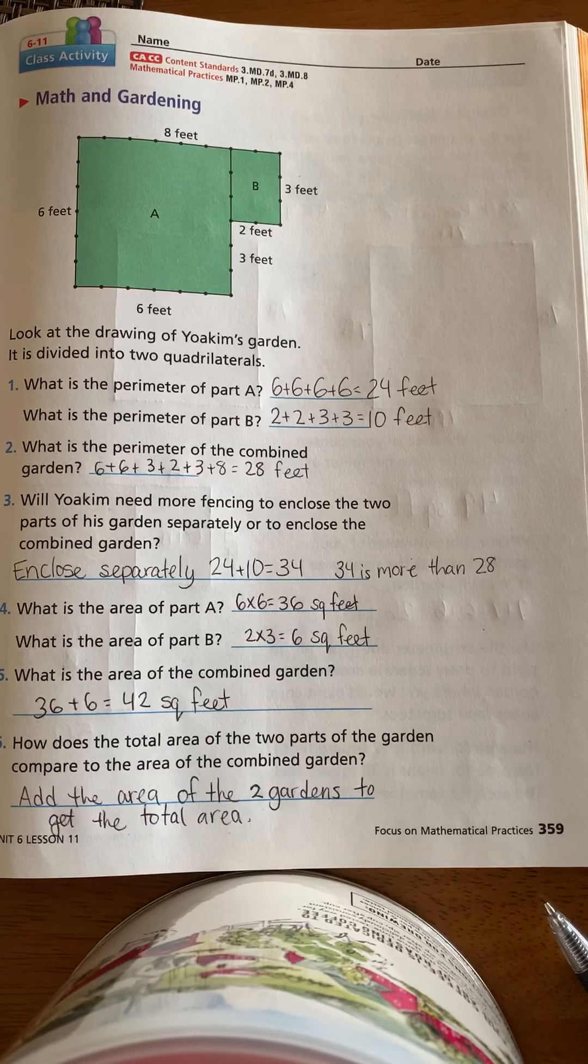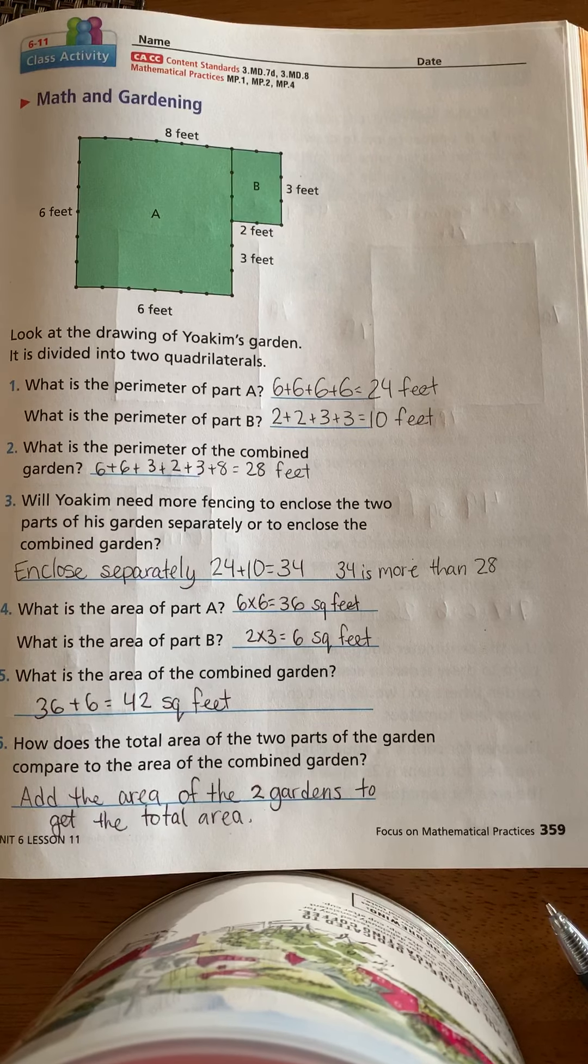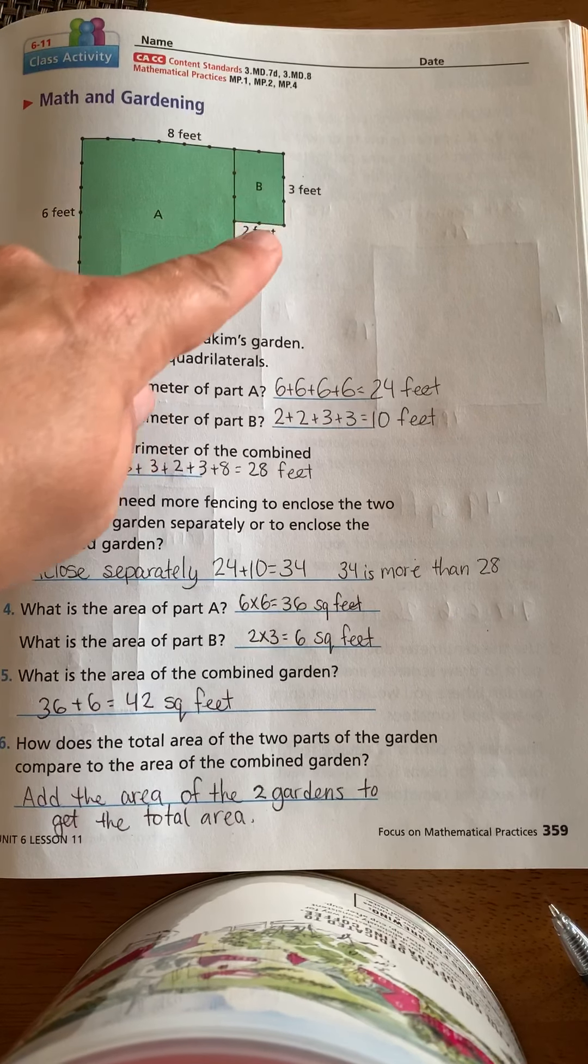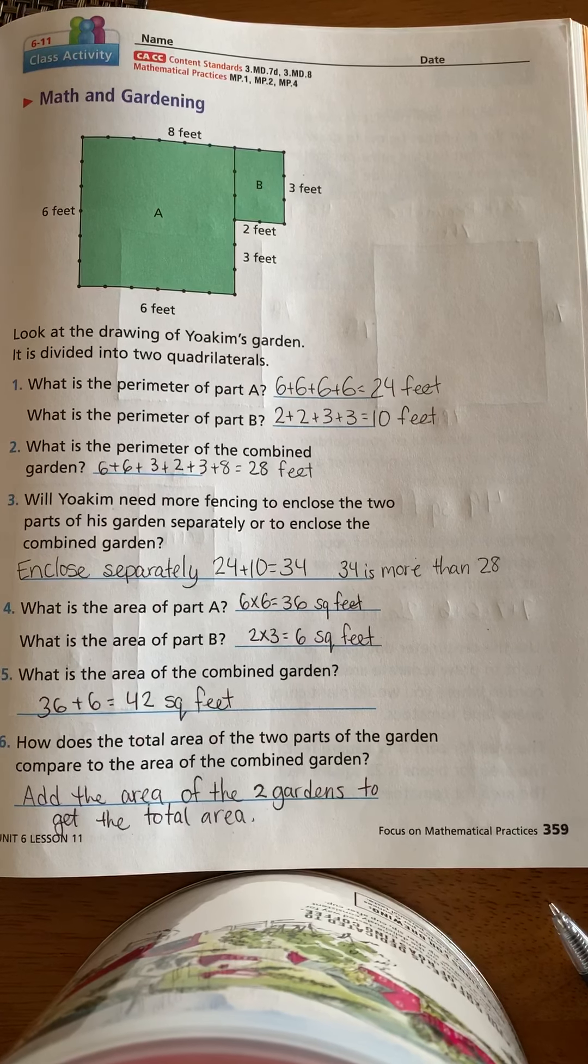What is the perimeter of part A? Part A, the perimeter is 6+6+6+6. Don't get confused here where it says 8. That's 8 all the way across. It's actually just 6 because it's a square, right? So that's 24 feet.